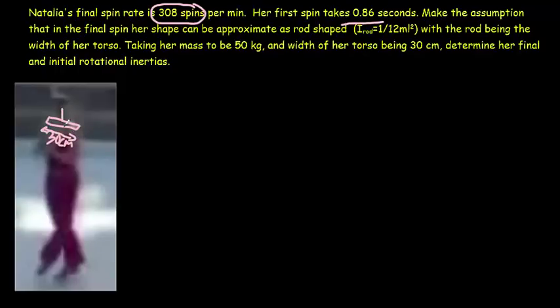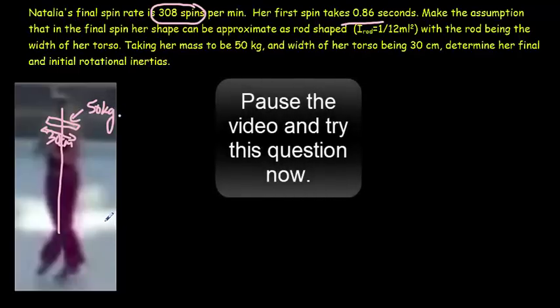So, that rod is spinning about an axis through the center of her body. And it has a mass equal to her mass, which is 50 kilograms. So, pause the video and see if you can work out the final and initial rotational inertia of Natalia Kanunikova.